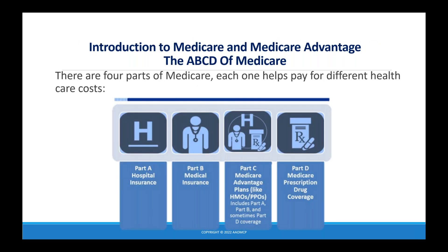There are four parts of Medicare, each one helping pay for different health care costs. Part A is hospital insurance. Part B is medical insurance. Part C is Medicare Advantage plans, which replaced Part A and Part B — the subject of this whole boot camp. And Part D is prescription drug coverage.